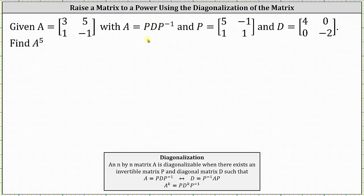So once we have the diagonalization of matrix A, we determine the fifth power of matrix A by computing P times D to the power of five times P inverse. Because we are given matrix P and matrix D, the next step is to find the inverse of matrix P.